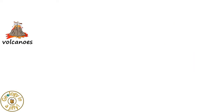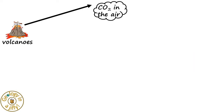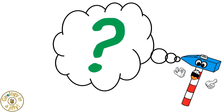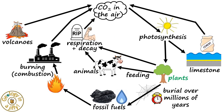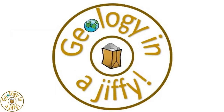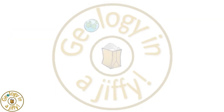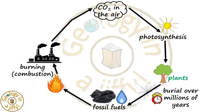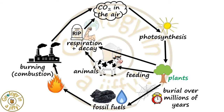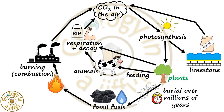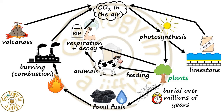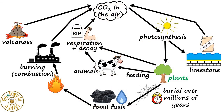Volcanoes are also a natural means of adding extra carbon dioxide gas into the atmosphere. How can I remember all of this? If we think of our Geology in a Jiffy logo, it is a circle. So by placing our first cycle upon it, then adding the other processes, then the limestone, and finally the volcanoes, we have the carbon cycle.